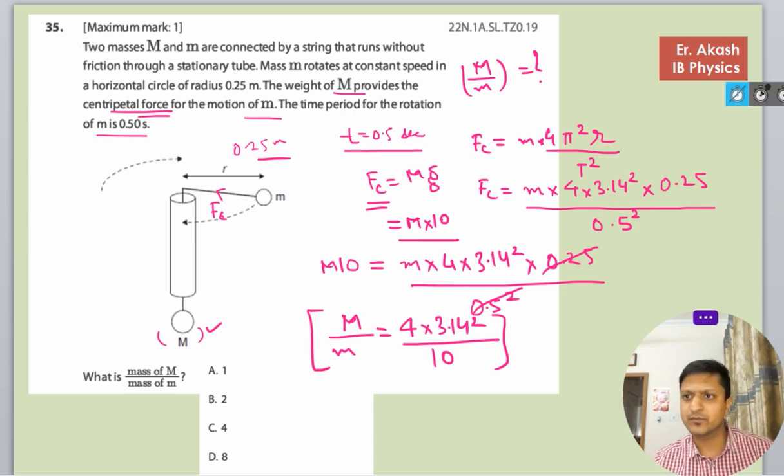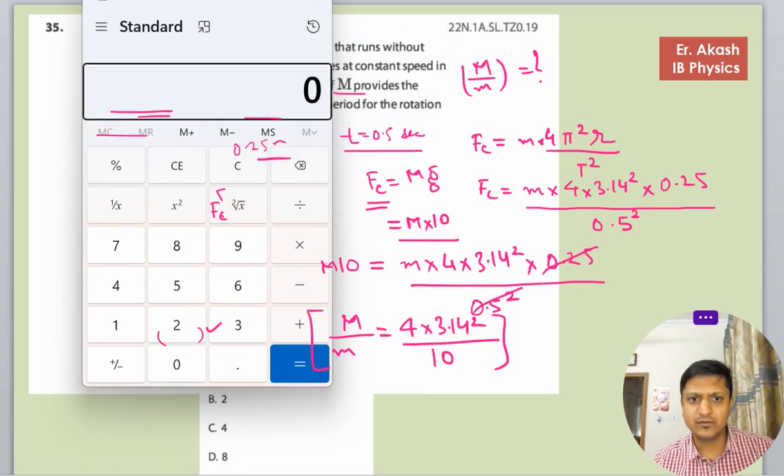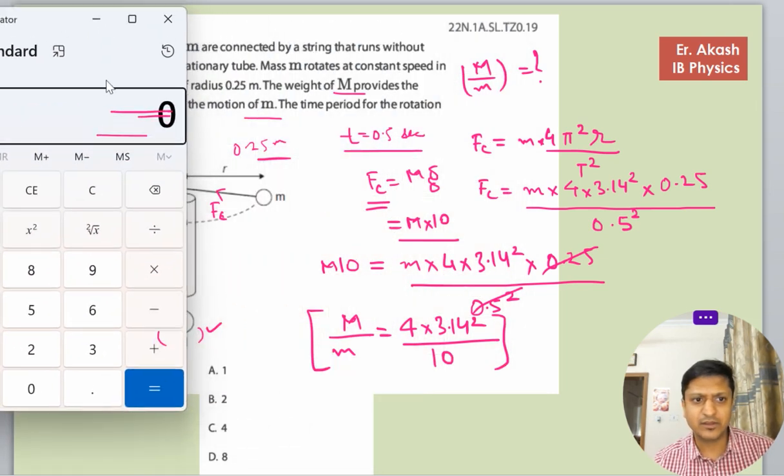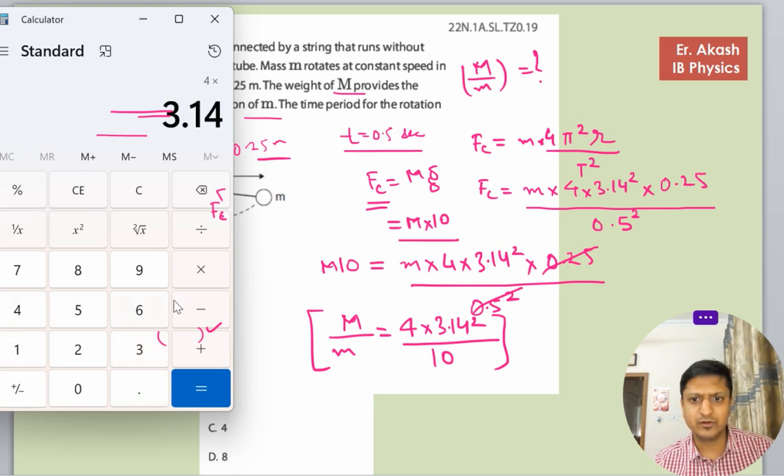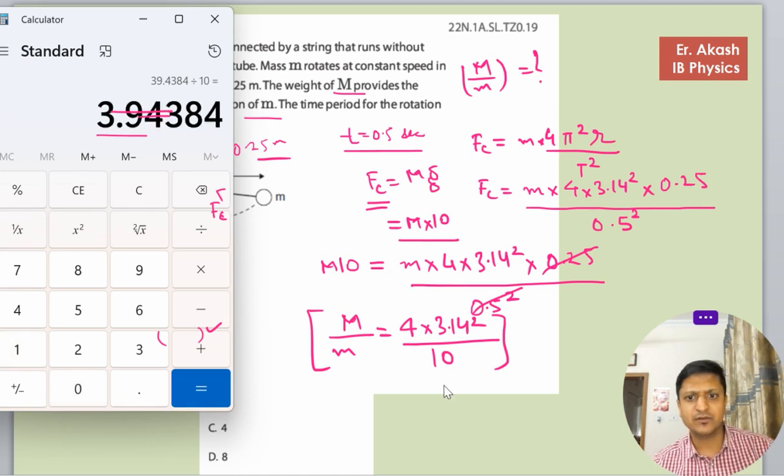Now we will use the calculator. 4 into 3.14 into 3.14 divided by 10. When we divide by 10, this equals 3.9.